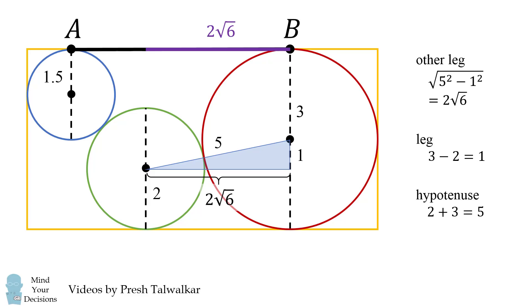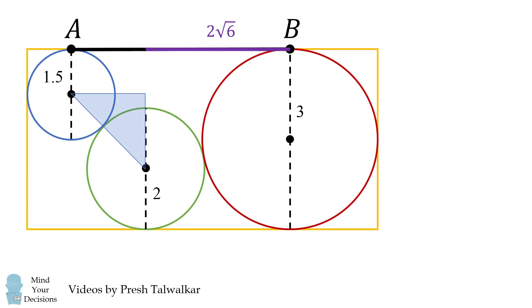We now will figure out the rest of the distance by considering the horizontal distance between the blue and the green circle. So we'll draw another right triangle. Now in order to figure out the vertical distance, or one leg, of this triangle, notice that this length is equal to 1.5 because that's the radius of the blue circle.